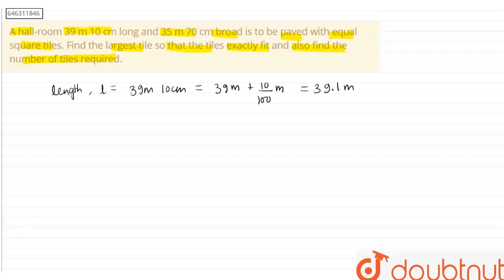We know that 1 meter is equals to 100 centimeter, right? Then 1 centimeter becomes 1 by 100 meter. So 10 centimeter becomes 10 divided by 100 meter, so this is equals to 0.1 meter, right? So from here the length turns out to be 39.1 meter, and similarly the breadth.